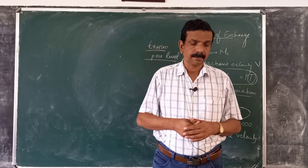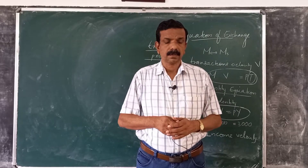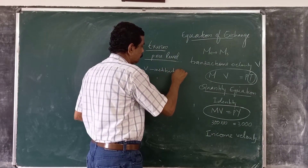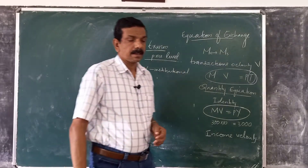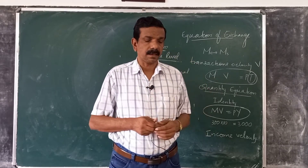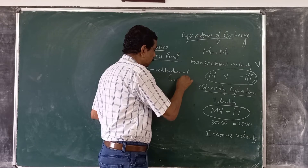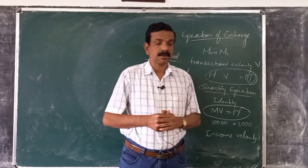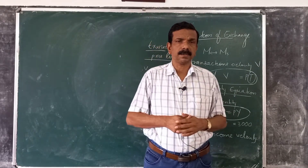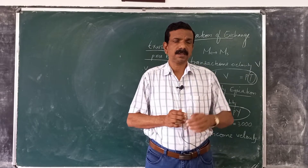According to quantity theory, the equilibrium level of velocity is determined by institutional factors like payment habits and payment technology — such as the average length of the pay period and use of ATMs. Since velocity is determined by institutional factors, we can assume it is fixed in the short term — V is fixed. Then, in the classical theory of income and output determination discussed in previous classes, real variables are determined without reference to money.